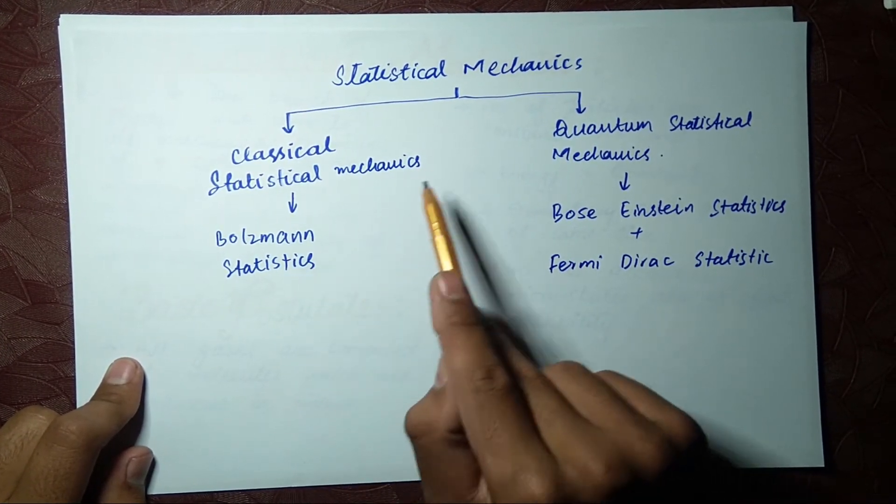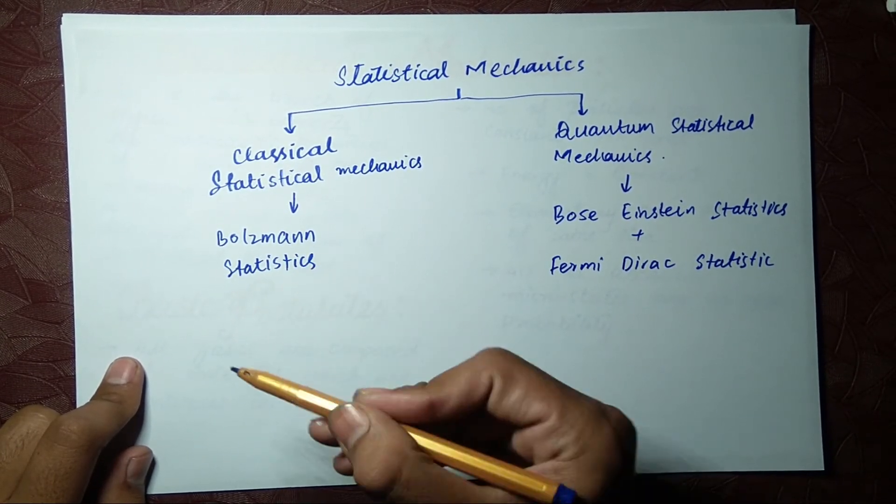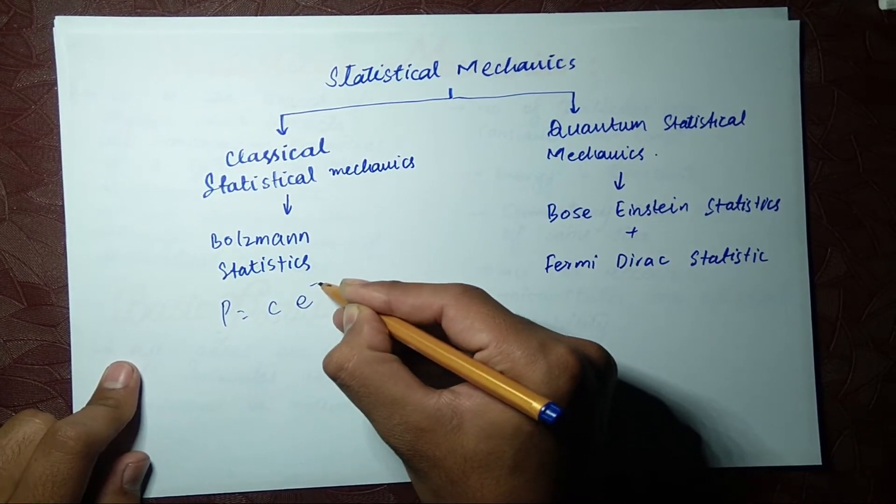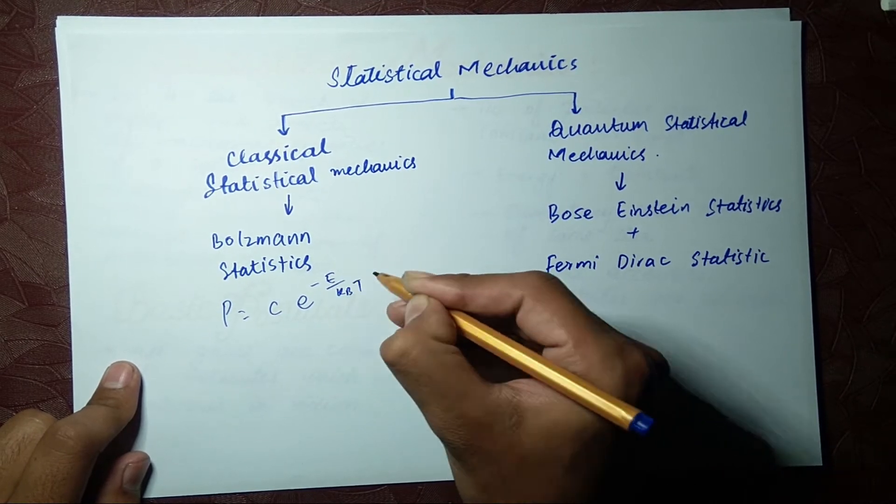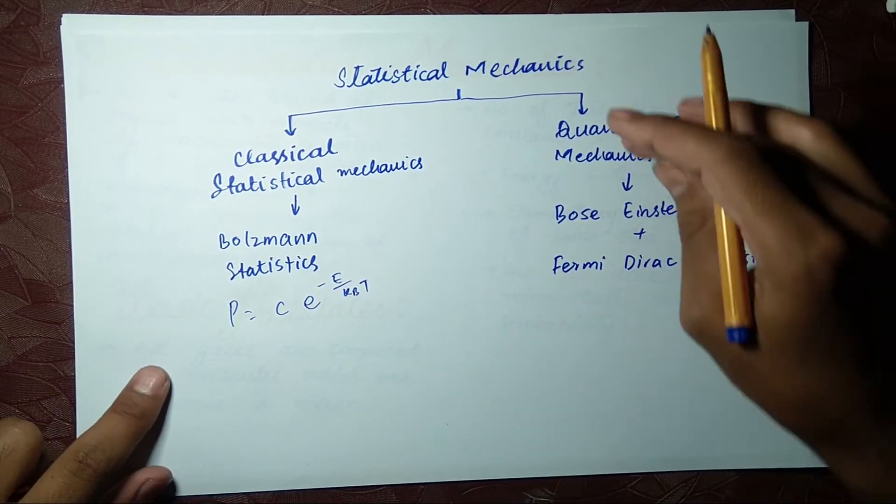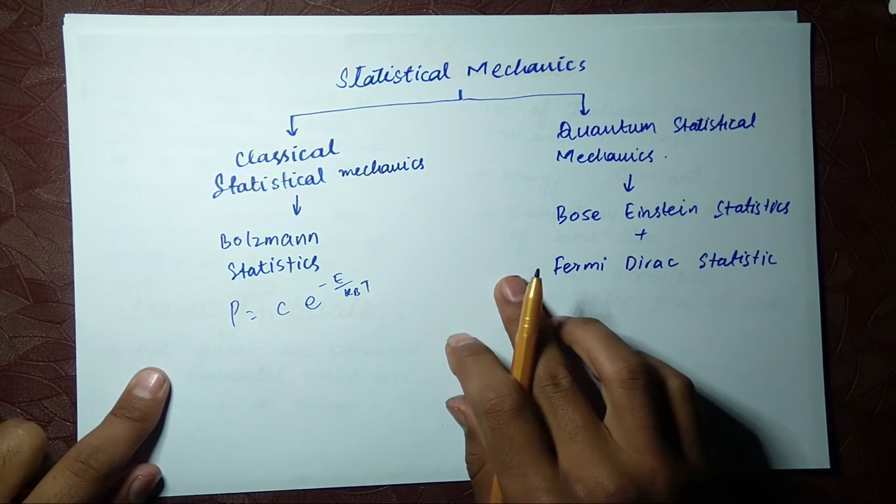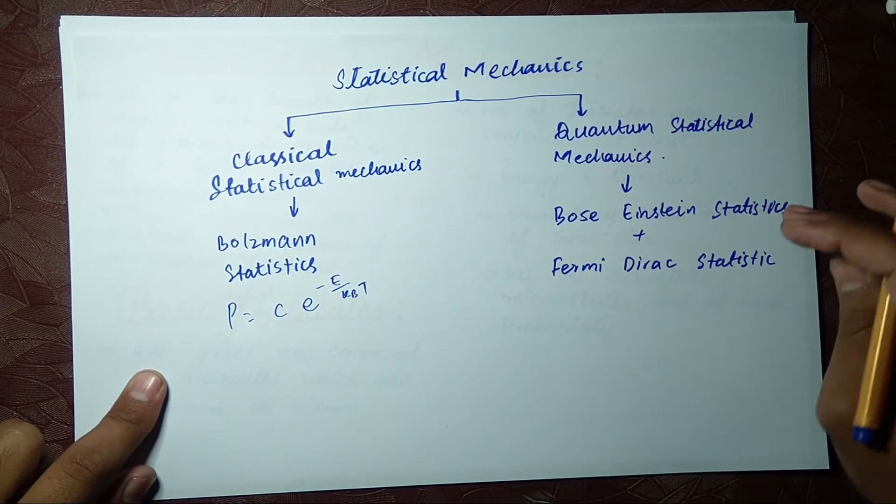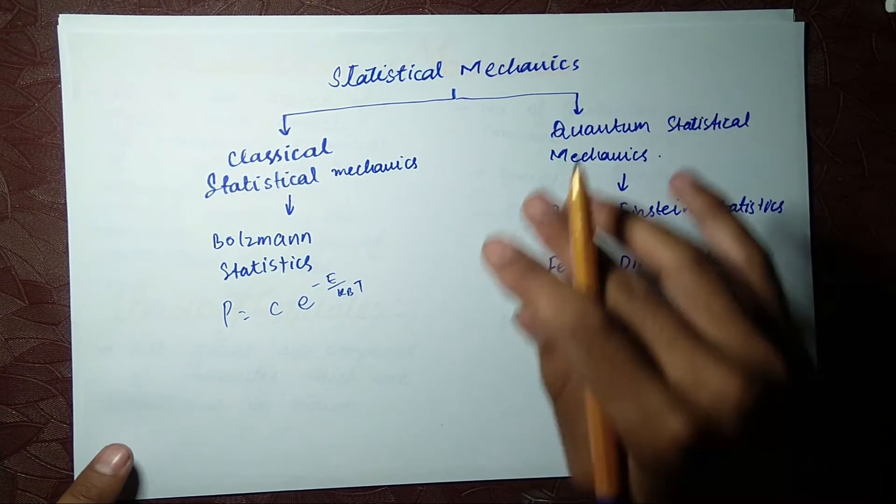From those two main types we will have the Boltzmann statistics, which is P equals C times e to the power minus E over kB times T. Let's see what this is. First we will discuss this term, then we will discuss the others, then these two. We will discuss them step by step.